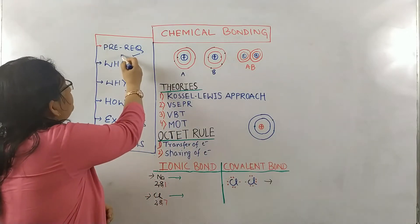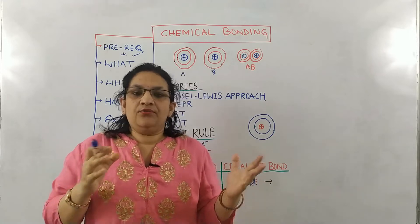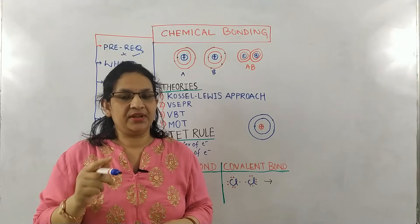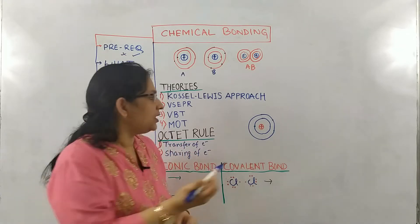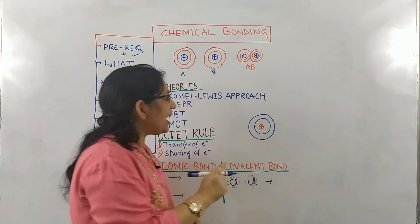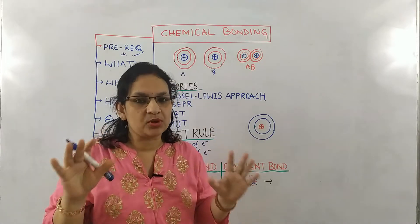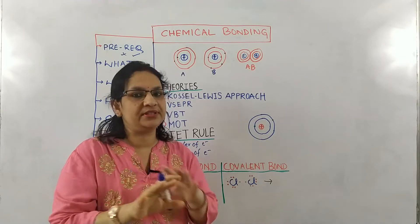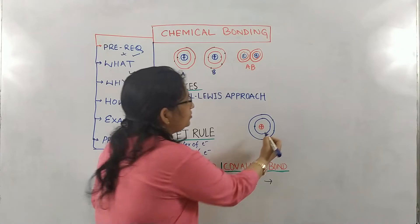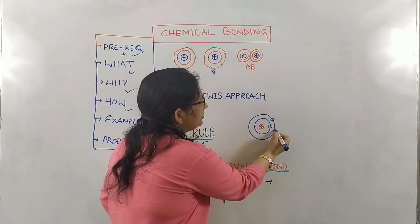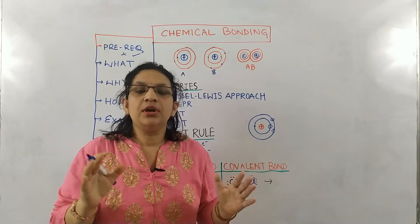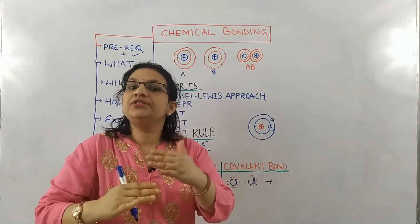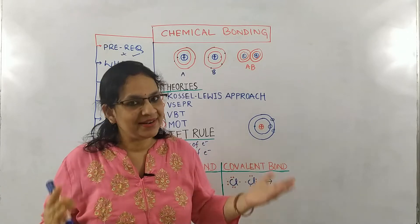Moving back to prerequisites: for knowing chemical bonding, you have to know the structure of the atom. Let me brief that for you. You have to know that an atom has a nucleus which has positive charge because of the presence of protons. It also has neutrons which have no charge. And electrons — these electrons are revolving around the nucleus. So you have to know the electronic configuration, that means the arrangement of electrons in an atom.